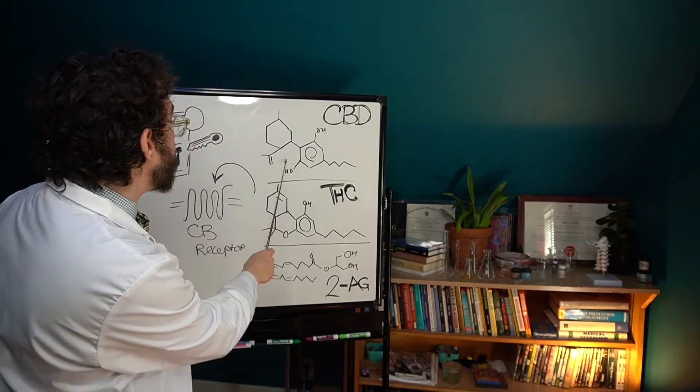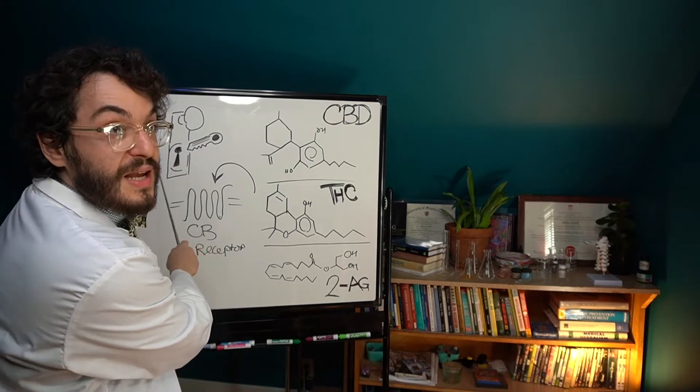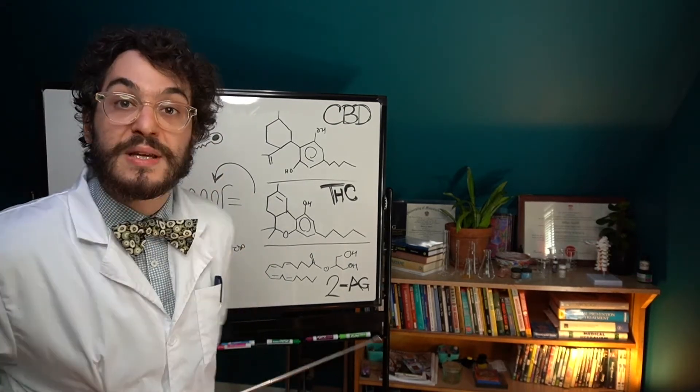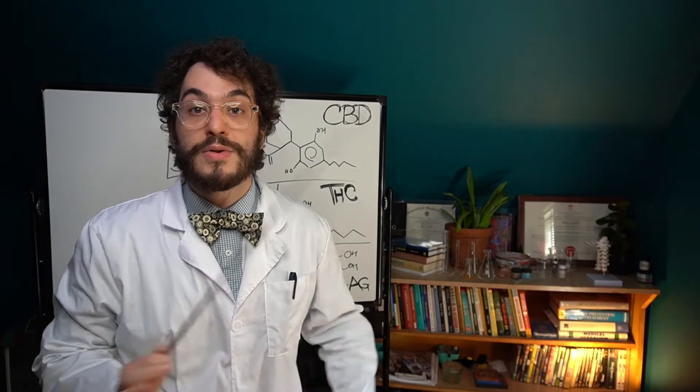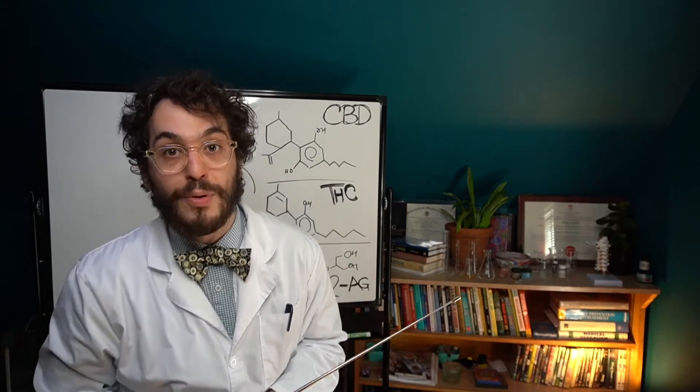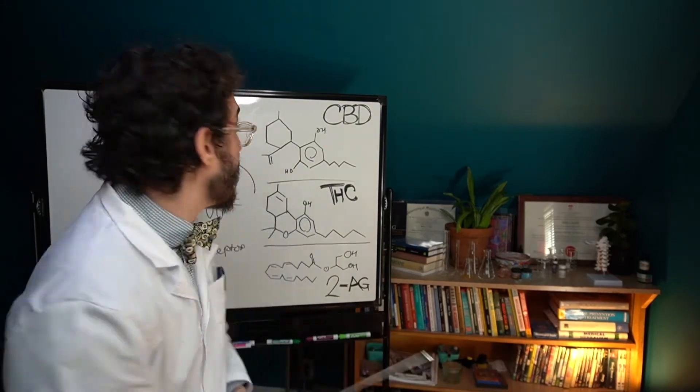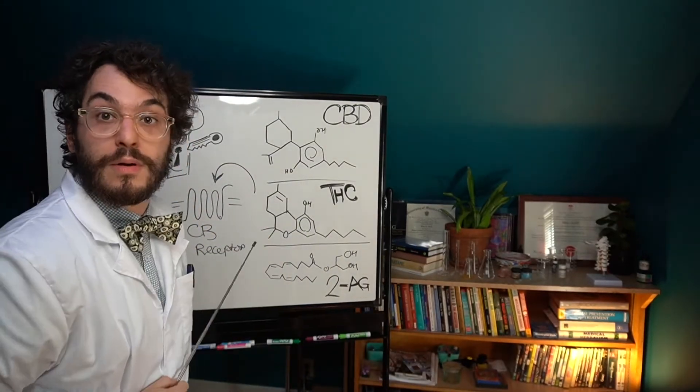So for example CBD because it doesn't really fit into the lock very well might block some of the effects of THC. So this is a potential example of an entourage effect from having a full plant extract rich in multiple different cannabinoids.